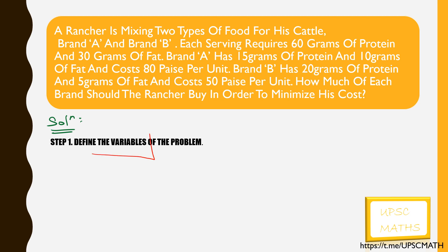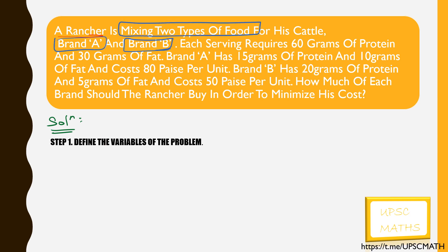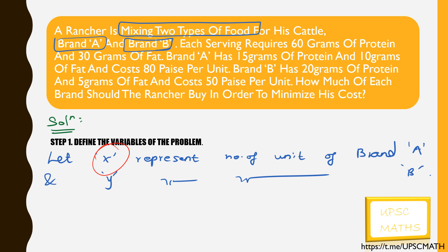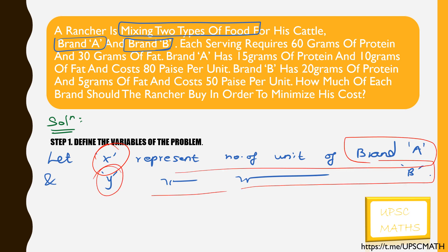Step 1 is to define the variables of the problem. The rancher is mixing two types of food for his cattle, Brand A and Brand B, and we have to calculate how much of each brand he should buy to minimize his cost. Let's consider x and y as the variables, where x represents the number of units of Brand A and y represents the number of units of Brand B.